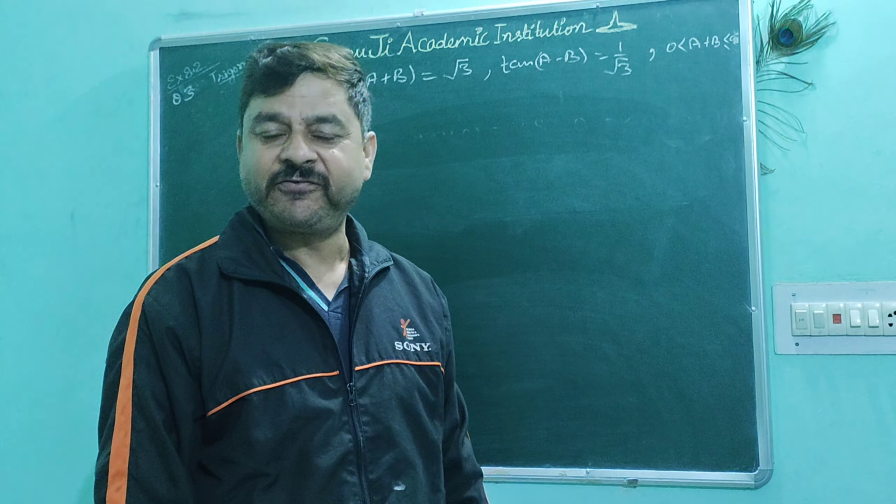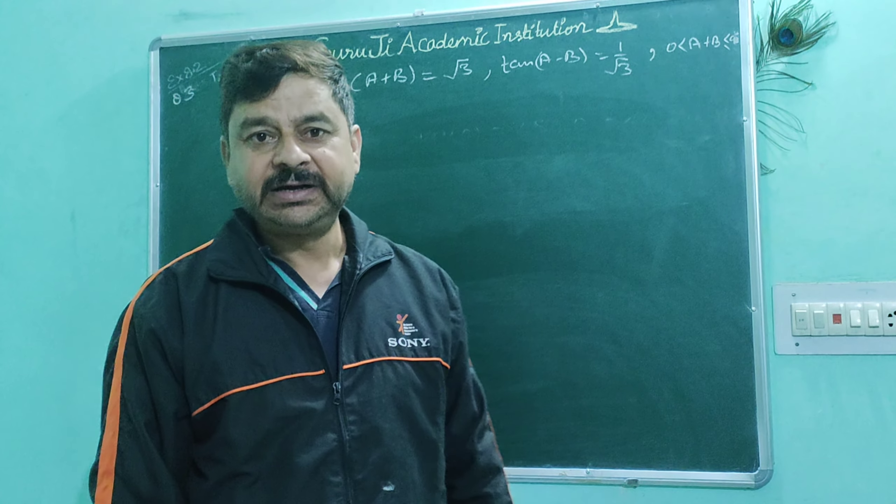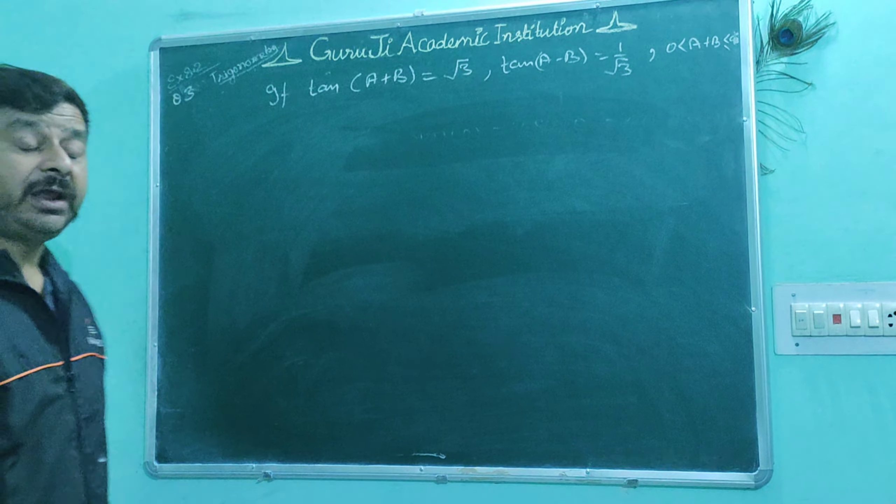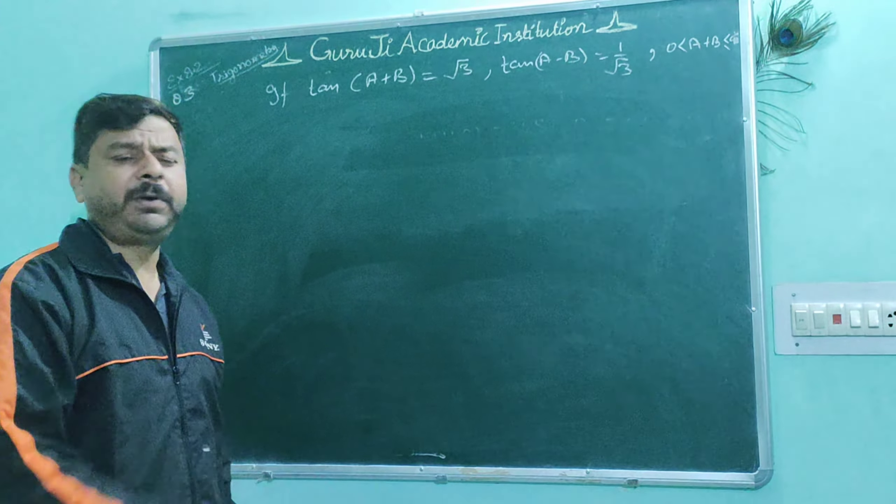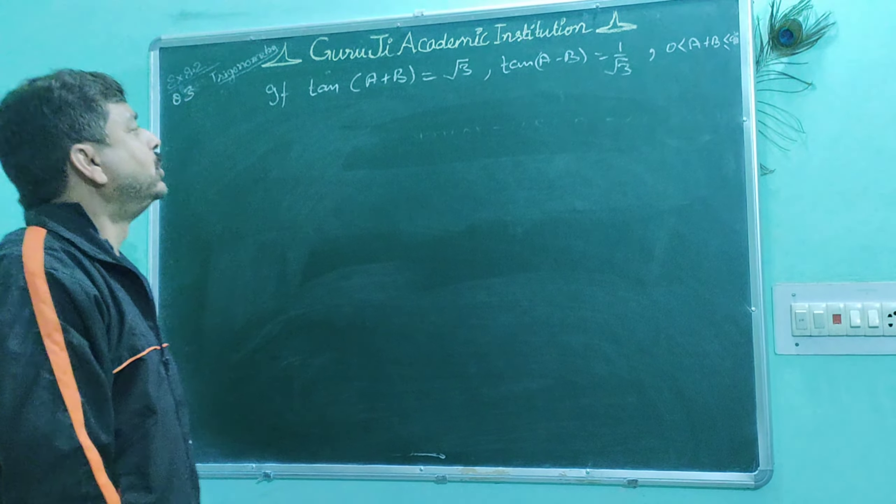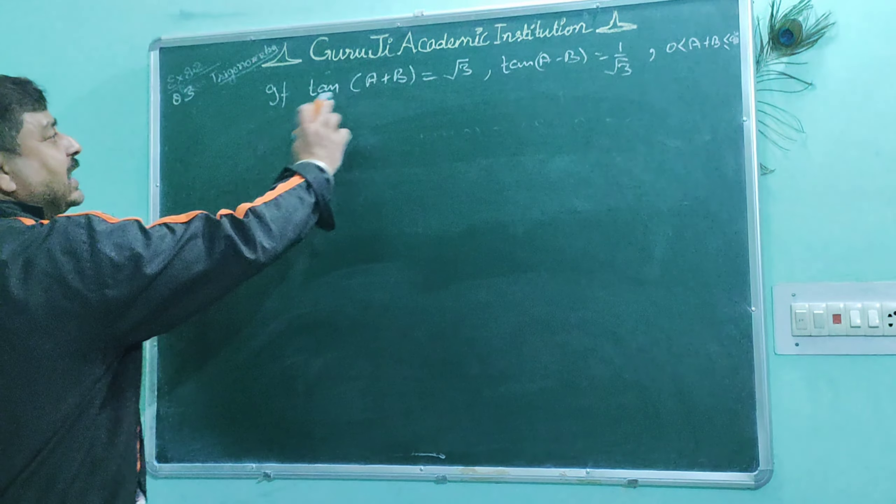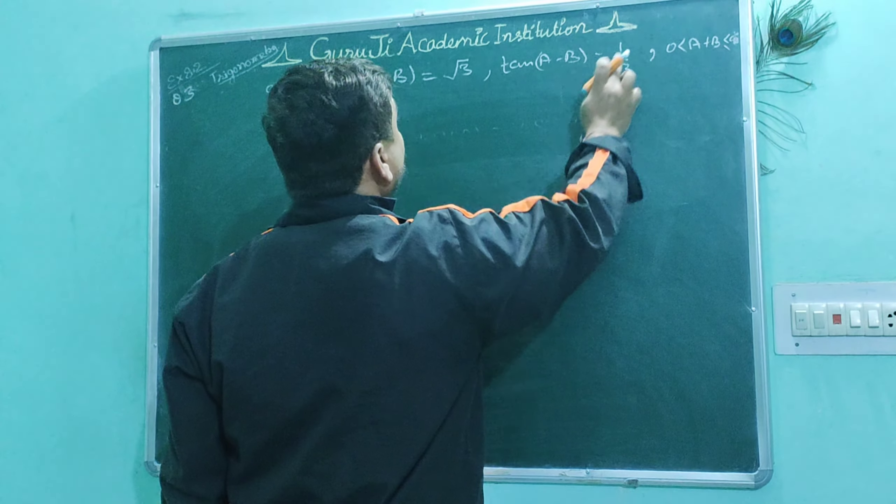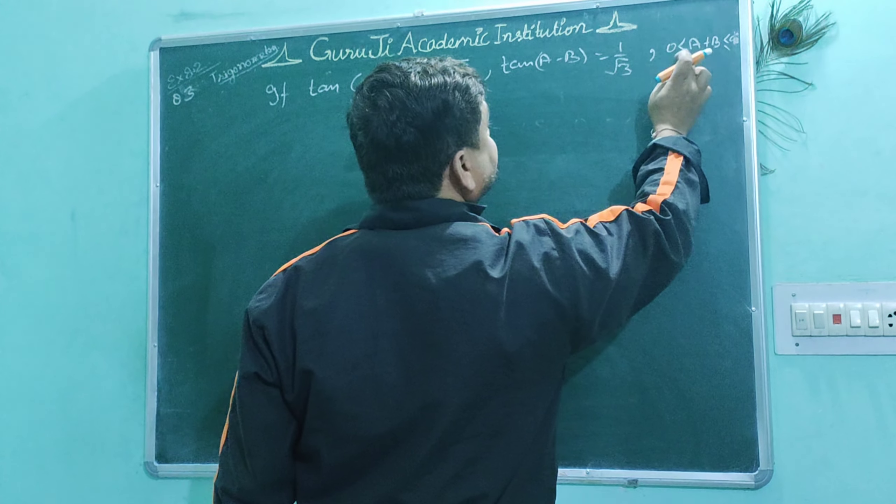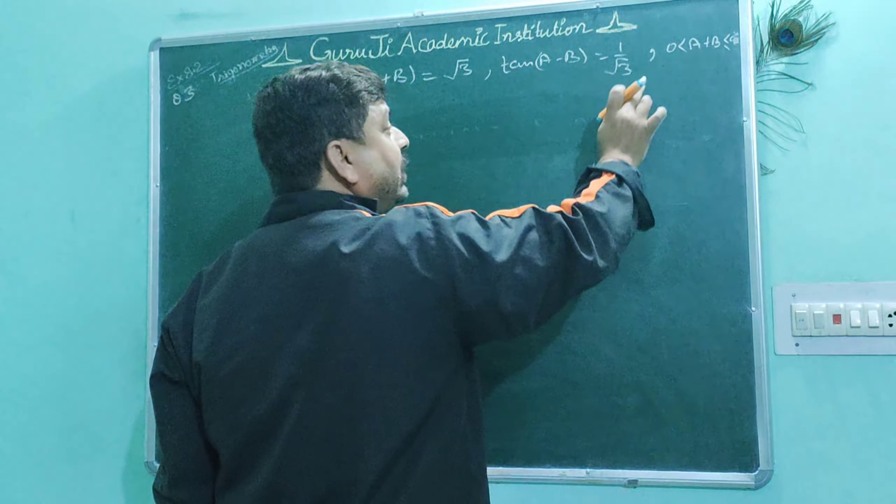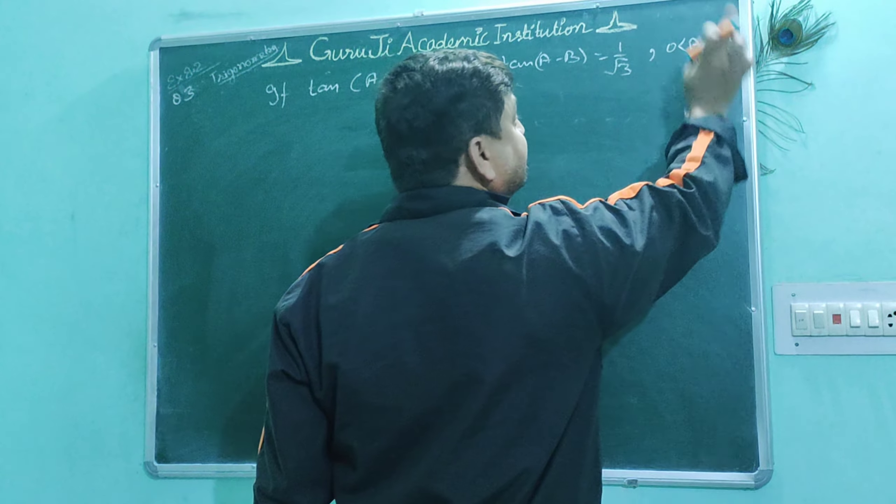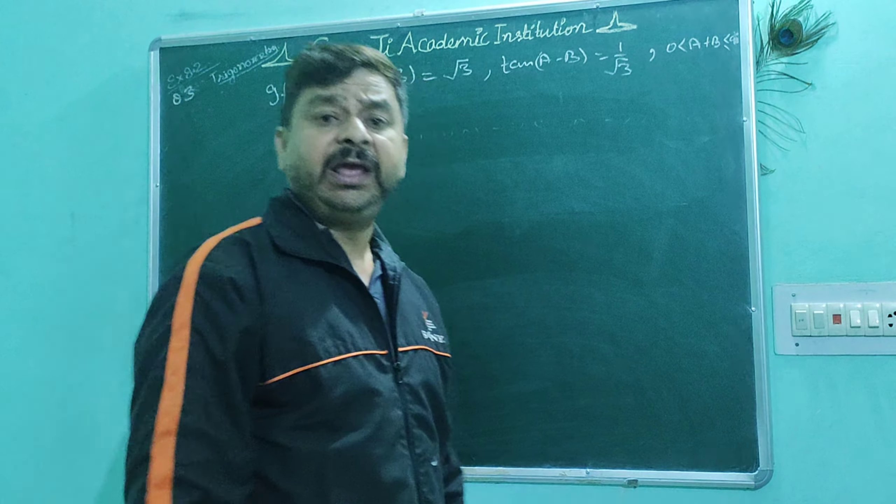Welcome my dear students to question number 3 from trigonometry exercise 8.2. This is a simple question. The problem states: tan(a+b) equals √3 and tan(a-b) equals 1/√3. We need to find a and b, given that 0 < a+b < 90.